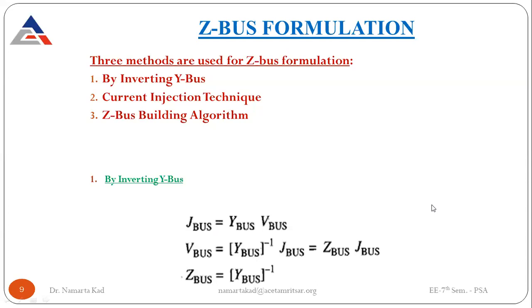For the Z bus formulation, there are three methods. The first method is just by inverting Y bus — a very simple method. Then there is the current injection technique. Then there is the Z bus building algorithm. Out of these three, the Z bus building algorithm is the main method upon which we have to do some numerical problems. It is very important from the exam point of view also.